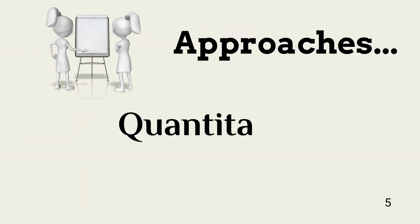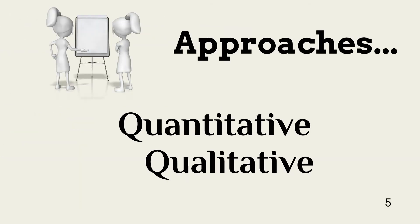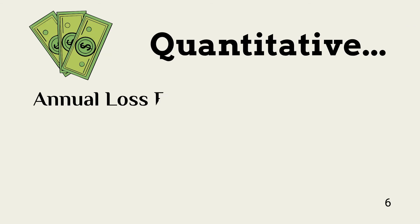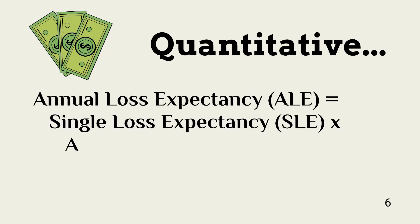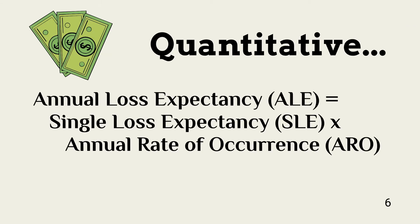There are two ways to arrive at the appropriate classification for an information asset: quantitative and qualitative. The most common formula for quantitative analysis determines the expected annual loss associated with the potential compromise, theft, or destruction of an asset or an incident. This is represented by the ALE value.